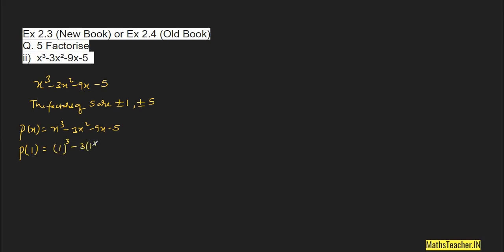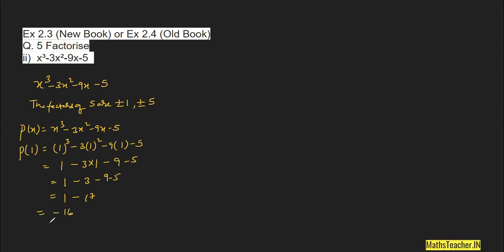Putting x = +1: p(1) = 1³ − 3(1²) − 9(1) − 5 = 1 − 3 − 9 − 5. Since 1 is the only positive term and all others are negative, we get 3 + 9 + 5 = 17, so the result is −16. This is not zero, so 1 is not a zero of the polynomial.